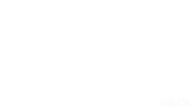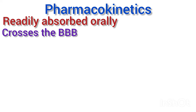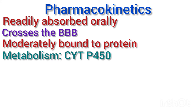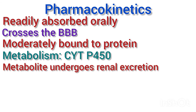Ondansetron is readily absorbed after oral administration and also readily crosses the blood-brain barrier. Following intravenous administration, maximum brain concentration is achieved quickly. It is moderately bound to protein to the extent of 60-70%, and is metabolized by cytochrome P450 enzymes in the liver, with metabolites undergoing principally renal excretion.